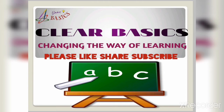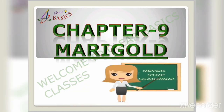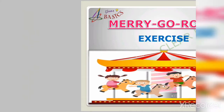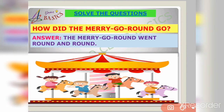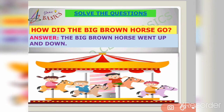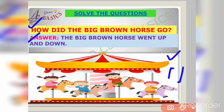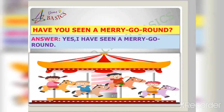Without any further delay, let us start our session. Today we will cover the exercise part of the ninth chapter, 'Merry Go Round.' Let us solve the questions. Our first question is: how did the merry go round go? The answer is the merry go round went round and round. Our next question is: how did the big brown horse go? Look at the picture, friends. The answer is the big brown horse went up and down.